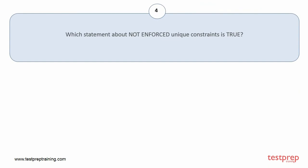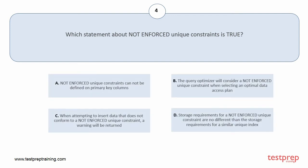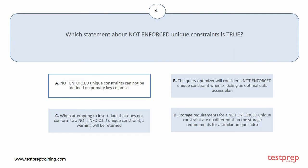Question number 4. Which statement about not enforced unique constraints is true? Your options are: A. Not enforced unique constraints cannot be defined on primary key columns. B. The query optimizer will consider a not enforced unique constraint when selecting an optimal data access plan. C. When attempting to insert data that does not conform to a not enforced unique constraint, a warning will be returned. D. Storage requirements for a not enforced unique constraint are no different than the storage requirements for a similar unique index. The correct answer is option A.